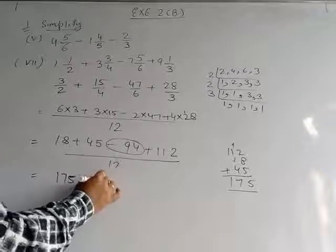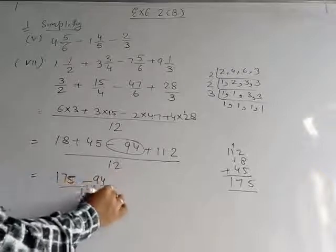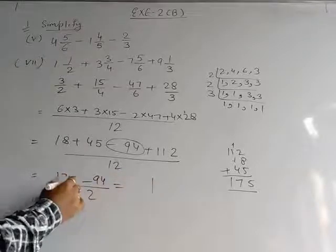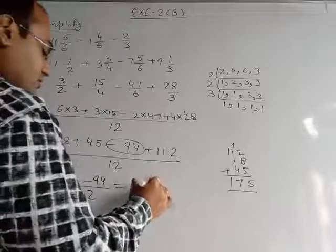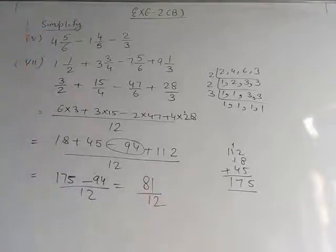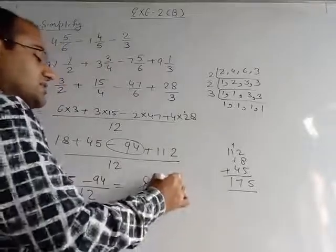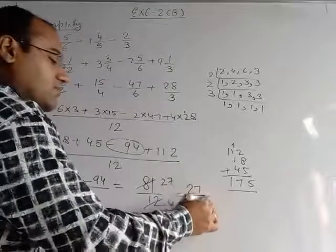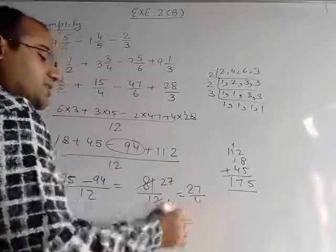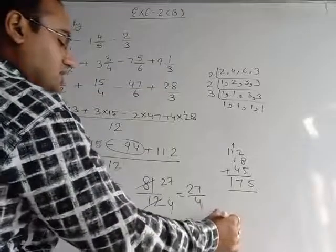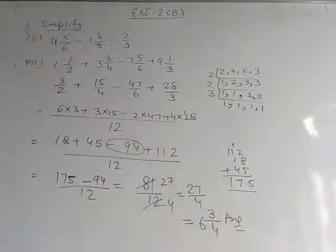The remaining term is minus 94/12. Now we subtract: 175 minus 94 = 81 upon 12. We can simplify by dividing by 3: 81÷3=27, 12÷3=4, giving 27/4. Converting to mixed fraction: 4×6=24, remainder 3. So the final answer is 6 whole 3/4.